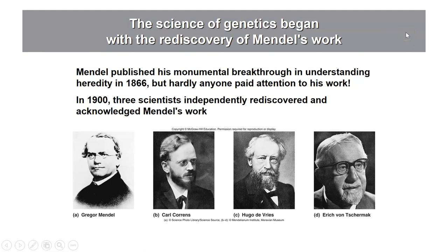A little bit of background is shown on this slide. If you recall from the previous module before the break, we were talking about Mendelian inheritance. Mendel discovered the basic rules of inheritance and published his work in 1866. It was largely unrecognized and was rediscovered in 1900 independently by three different scientists, and only then was it appreciated for the importance of the work.